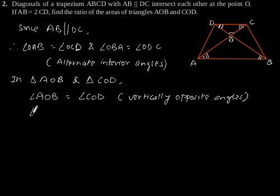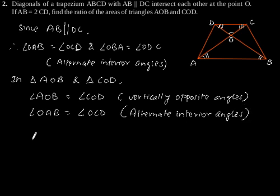And angle OAB is equal to angle OCD since they are alternate interior angles. Therefore, triangle AOB is similar to triangle COD by using AAA similarity criteria.